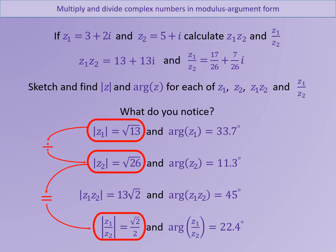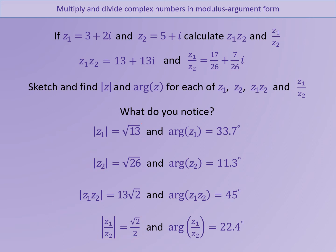So what that tells us is that if you take the modulus of Z1 and the modulus of Z2, it doesn't matter whether you find the modulus first and then multiply or divide, or whether you multiply or divide the numbers first and then find the modulus at the end — the answer will be the same in both cases.